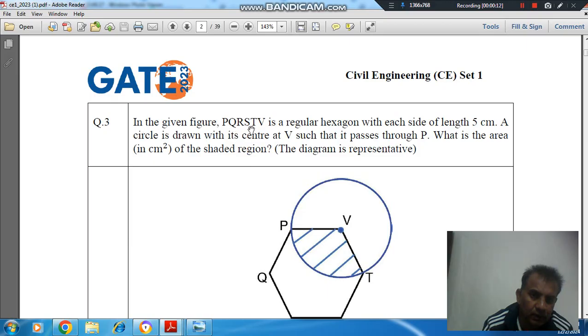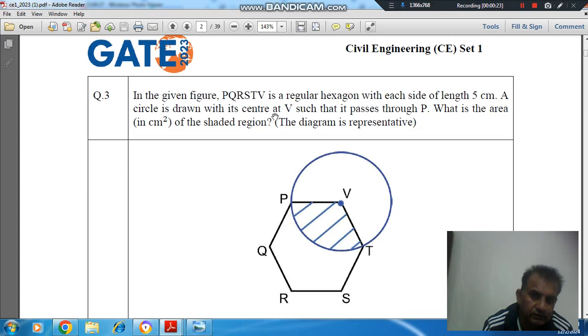In the given figure, PQRSTV is a regular hexagon with each side of 5 cm. A circle is drawn with its center at V such that it passes through P. What is the area in cm² of the shaded region? The diagram is representative.